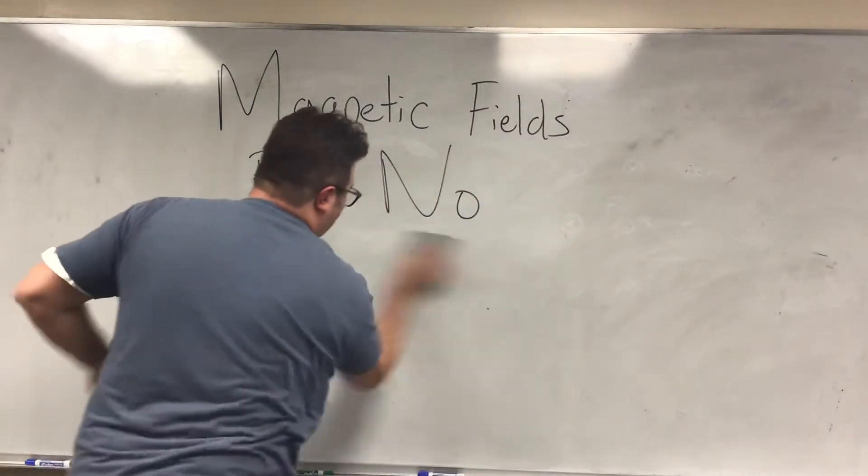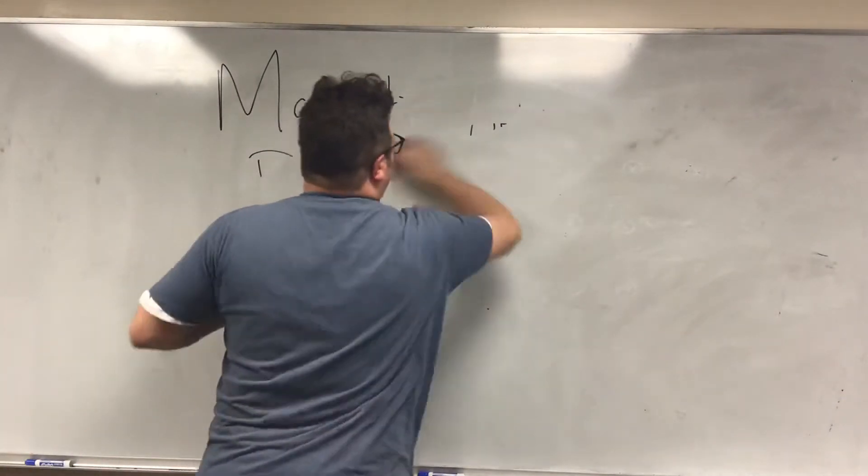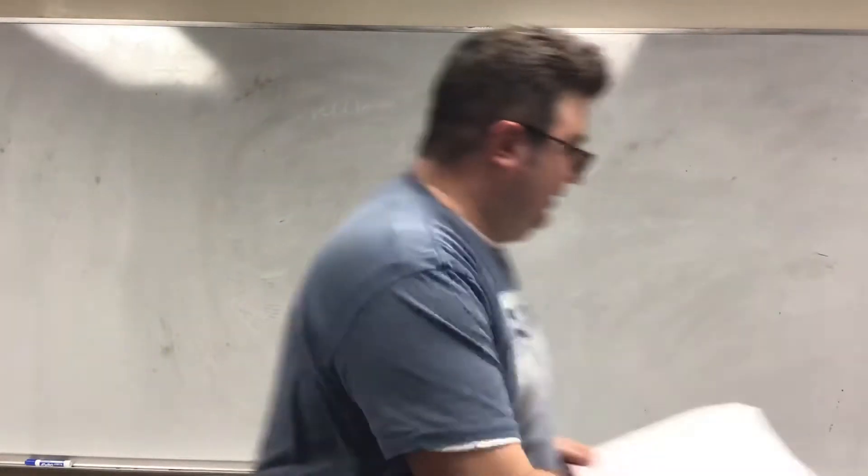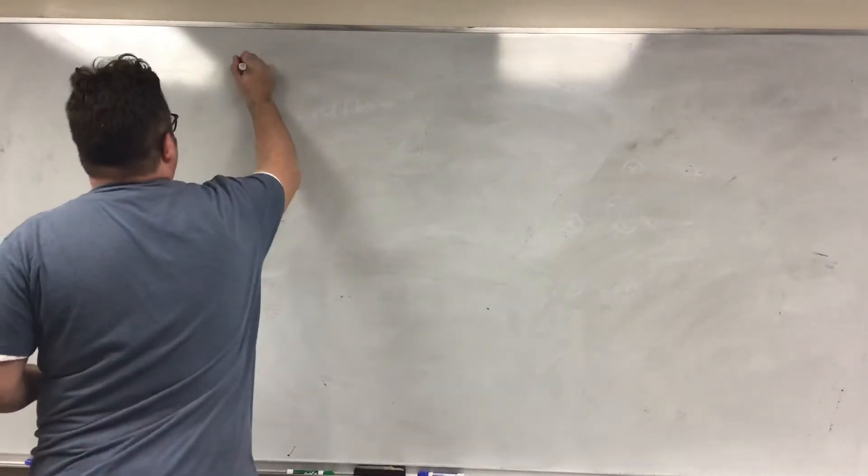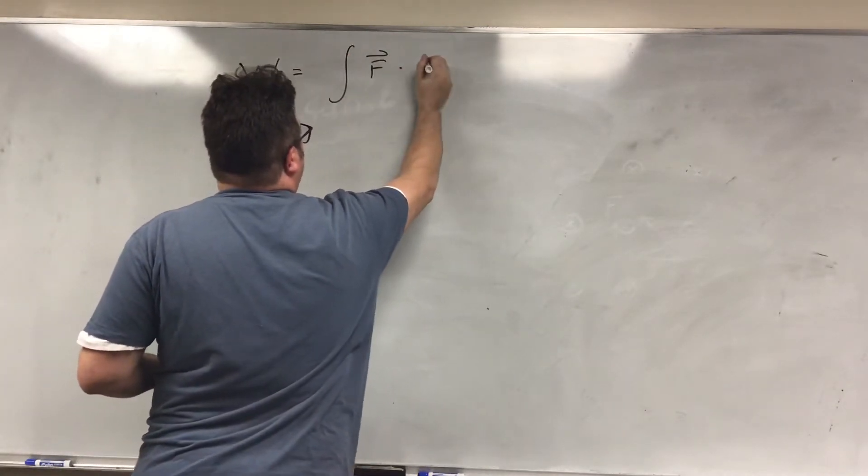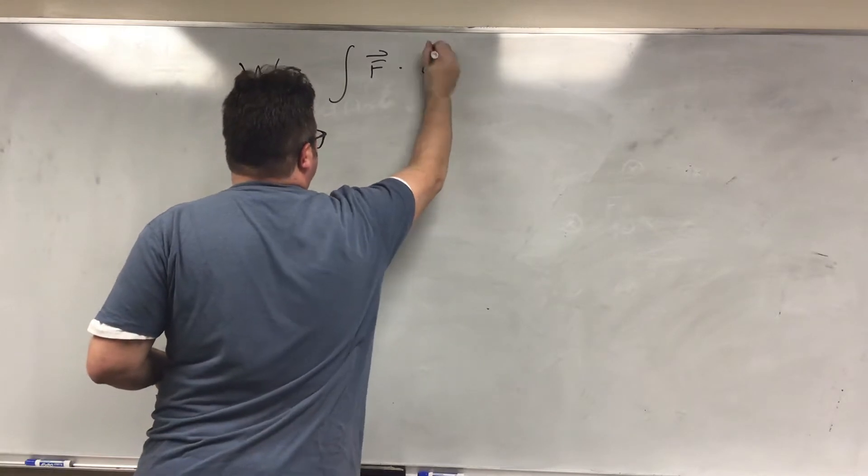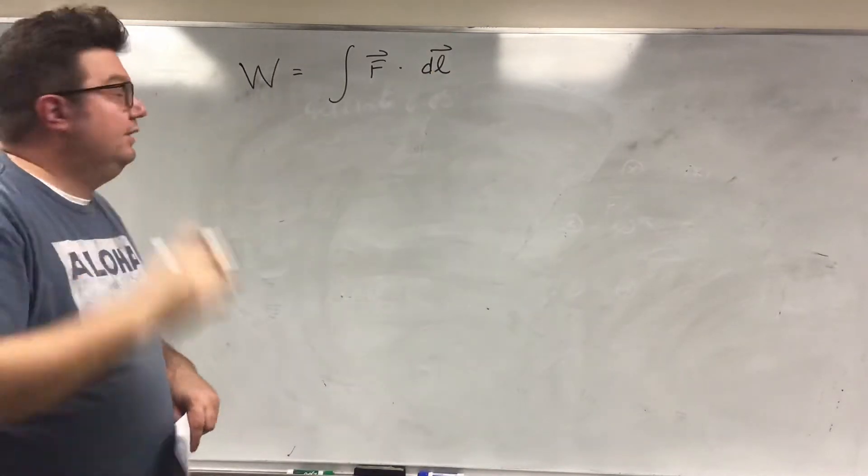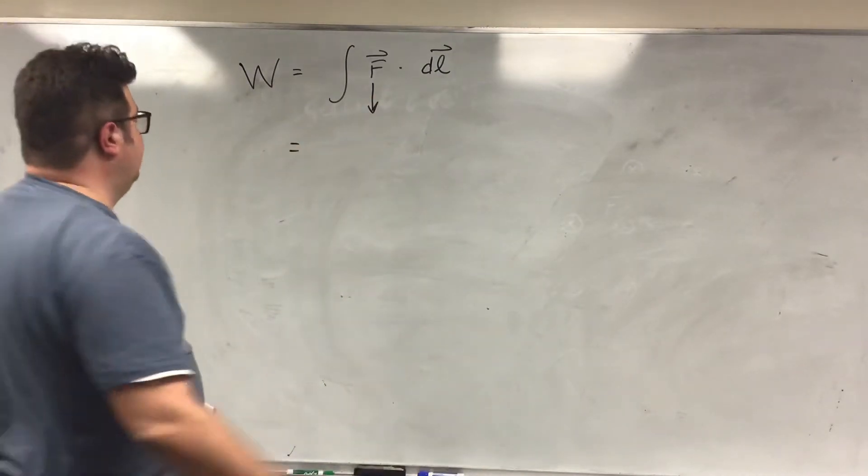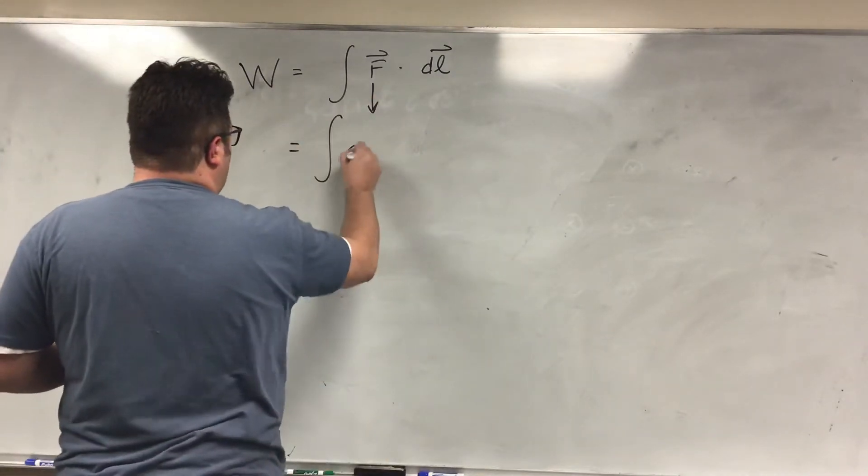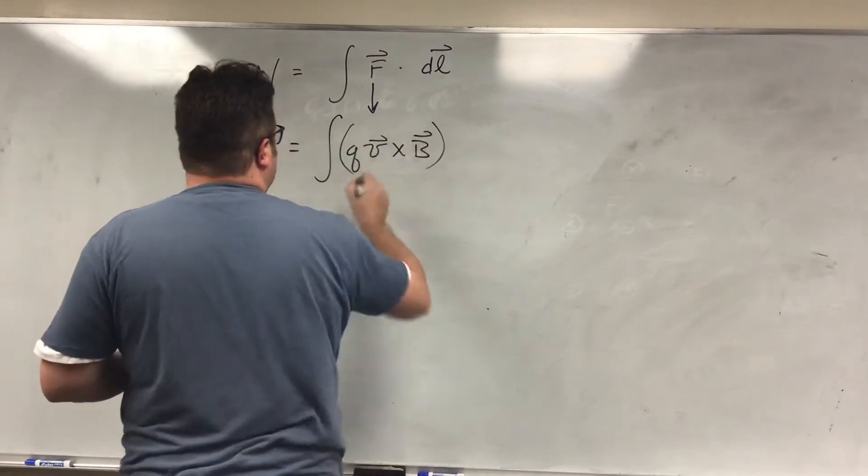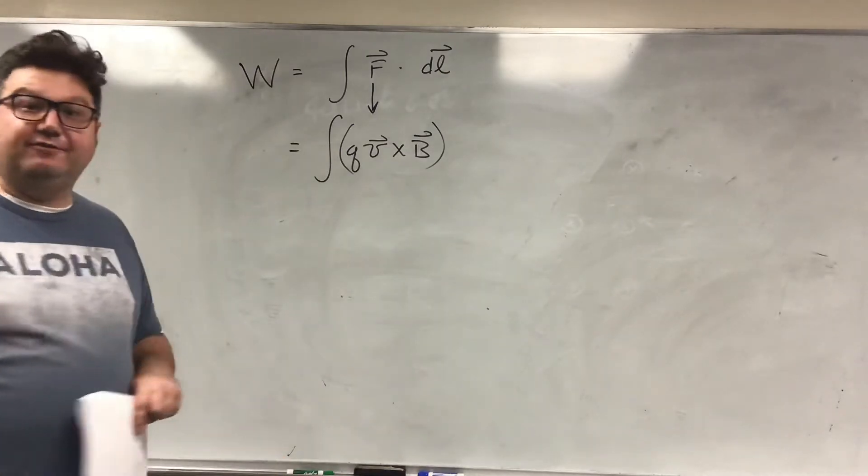Let's do a quick dirty proof. Chapter 8, there's a little bit more of a detailed proof. All right, so let's start with the equation for work. Work is equal to the integral of F dot DL, right? All right, well, what's F? For the magnetic field, this is going to be QV cross B. That's just the magnetic force.